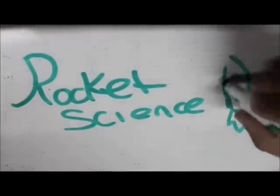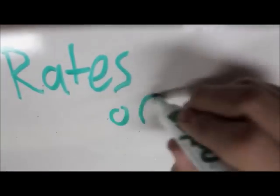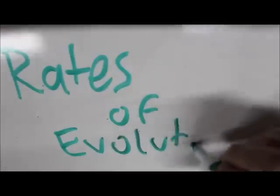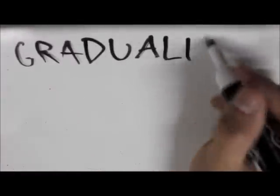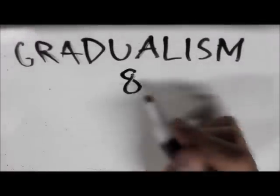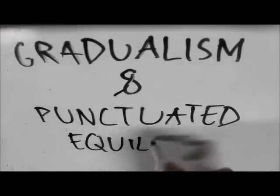This is Rocket Science, and we have the pleasure of presenting Rates of Evolution in plain English. Scientists have divided Rates of Evolution into two modes: Gradualism and Punctuated Equilibrium.